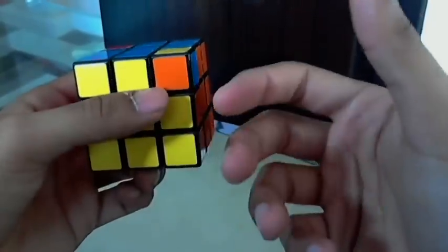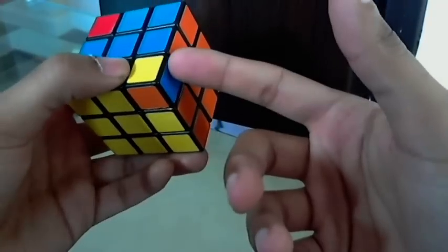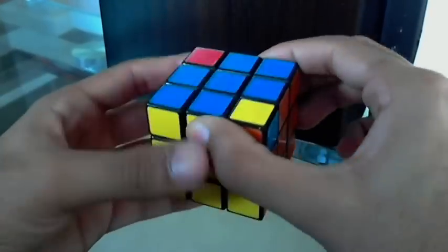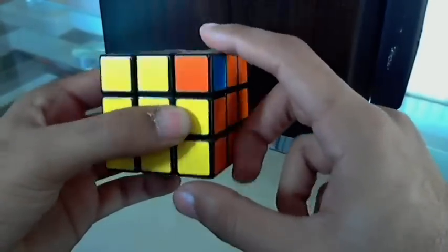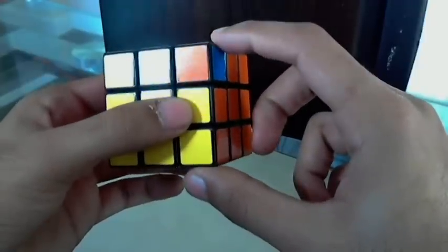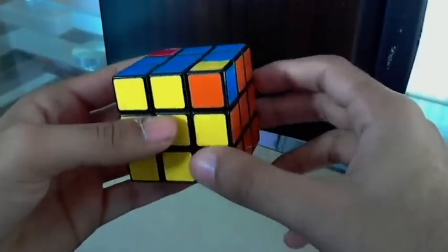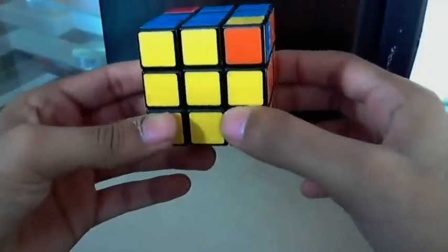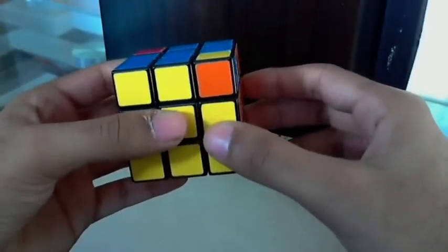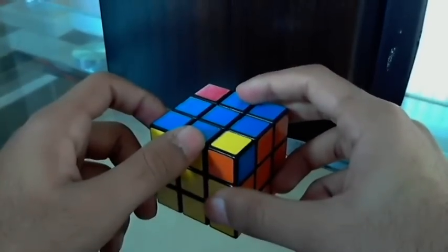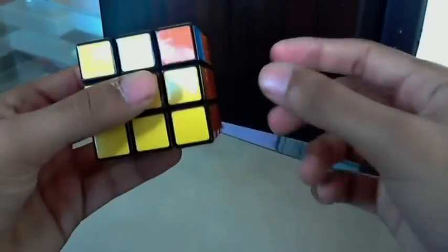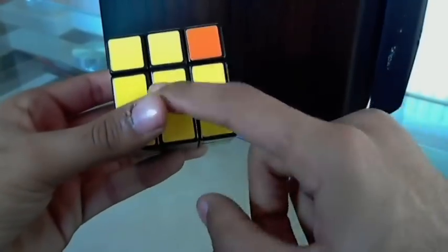So now find an unoriented corner, a corner that's not oriented properly, and then perform this algorithm. So my phone is ringing, but I'm not going to answer it because I know it's not really important. Let's wait for the phone to stop ringing. There we go. Now hold the corner piece to the right.